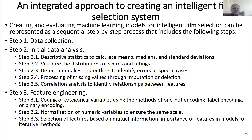Creating and evaluating machine learning models for intelligent film selection can be represented as a sequential step-by-step process. Step 1 is data collection: the collection of databases with user reviews, films, metadata, and information about users.